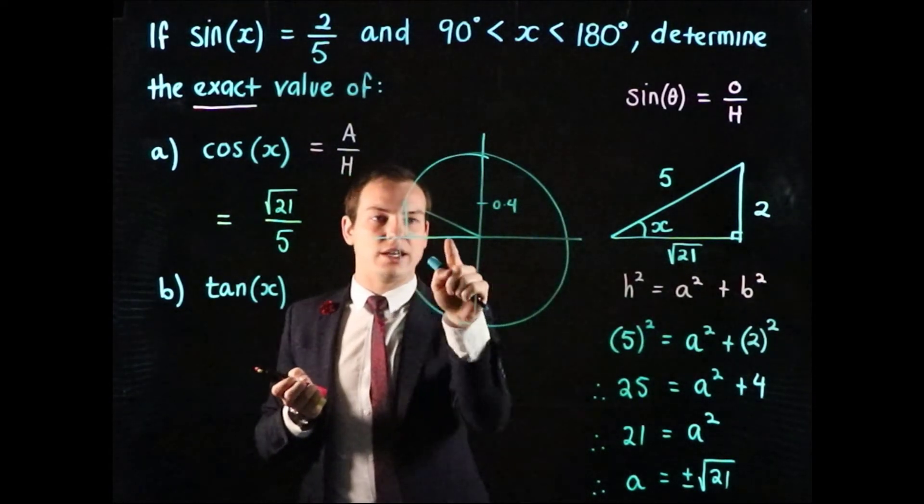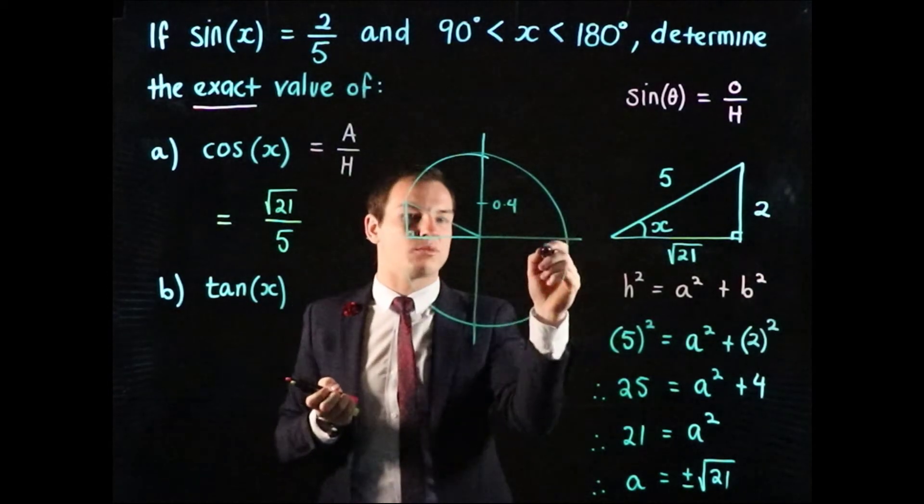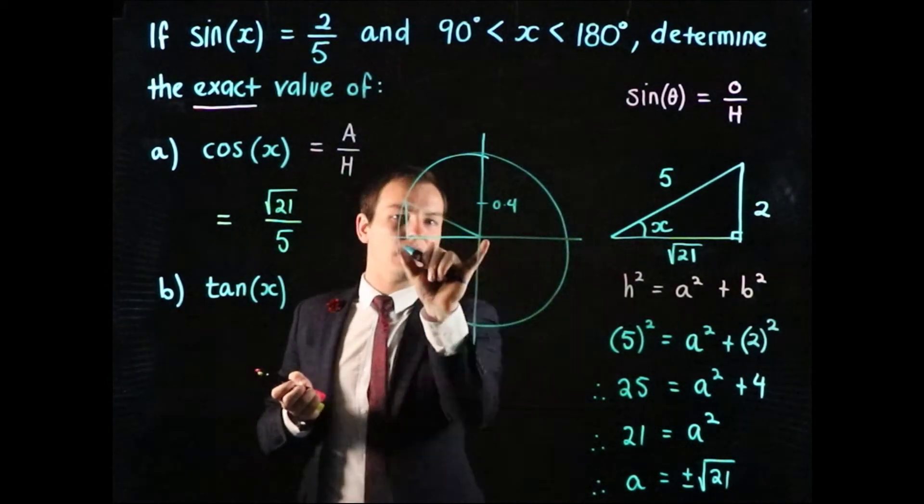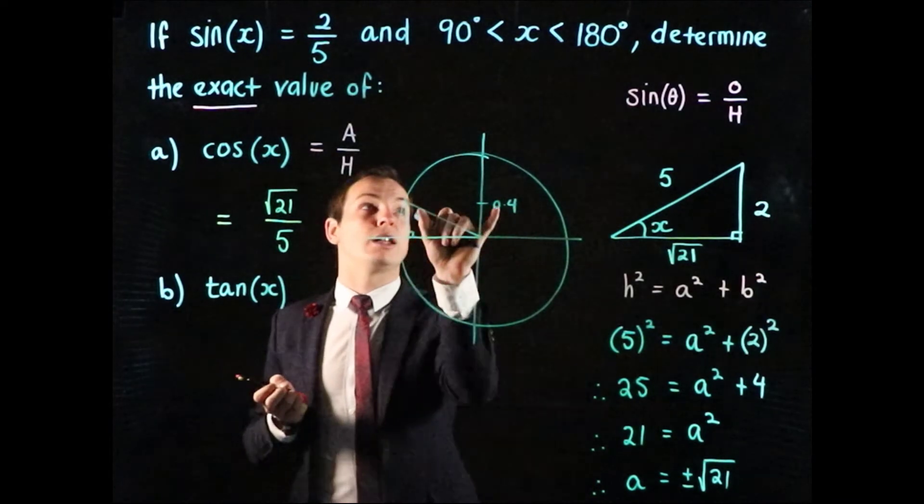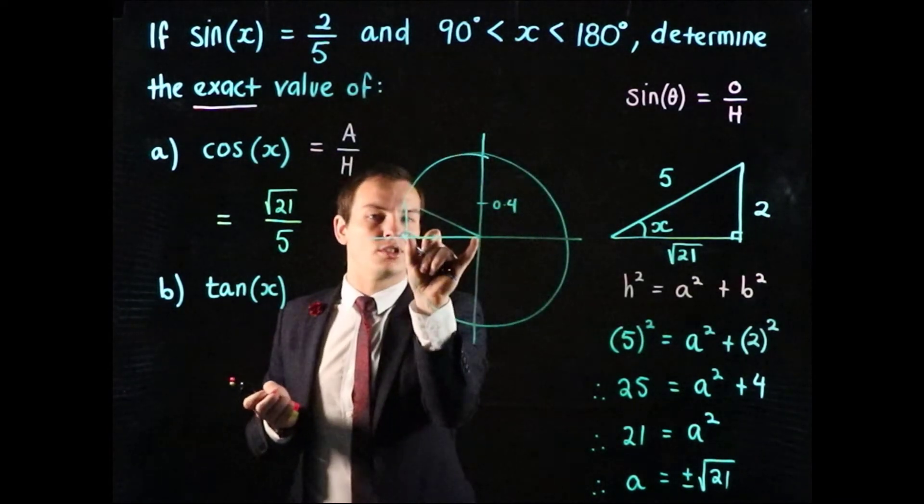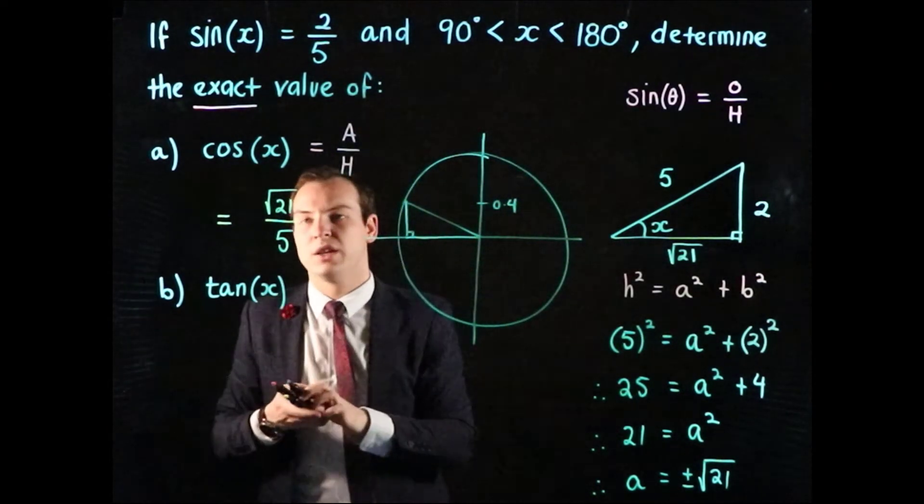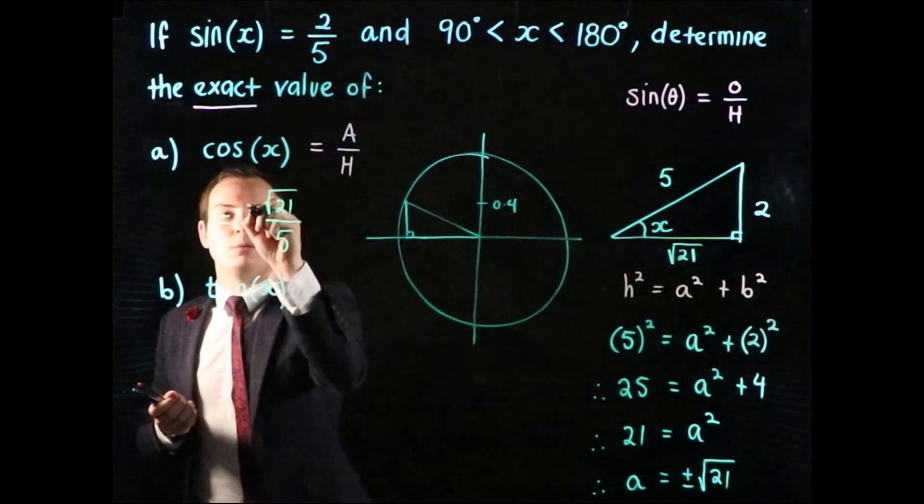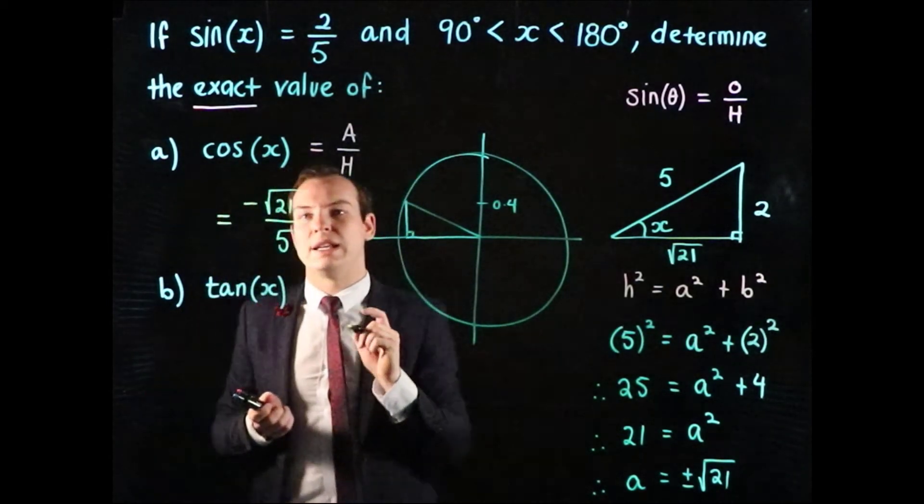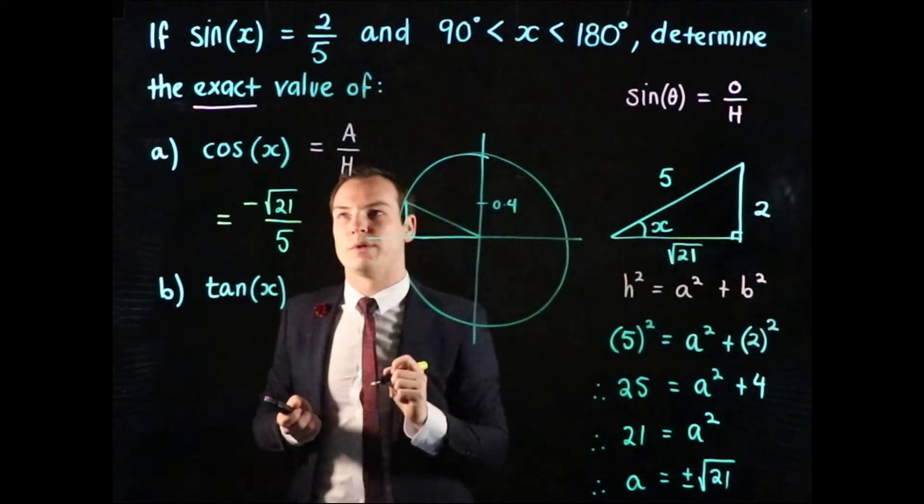What we can notice is that cosine in this quadrant is negative because it's read off the x-axis. It's positive over there, but by the time we get to an angle between 90 and 180, the cosine value is negative. So to finish up this answer, we know that this is going to equal negative square root of 21 over 5.